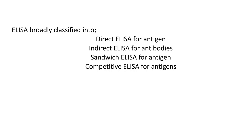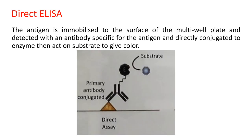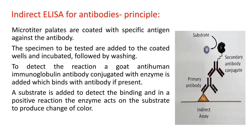Direct ELISA detects antigen; indirect ELISA detects antibodies; sandwich ELISA detects antigen; and competitive ELISA detects antigen. In direct ELISA, the antigen is immobilized to the surface of the microtiter plates and detected with an antibody specific for that antigen, which is directly conjugated to the enzyme. The enzyme then acts on the substrate to give the color. Here there is one antigen and one enzyme-labeled antibody.